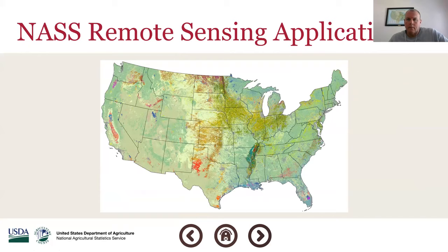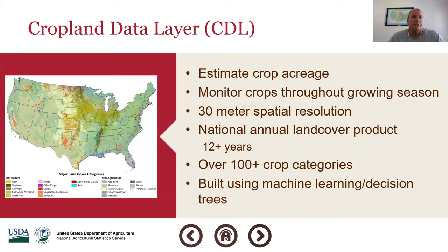Thank you, Hubert. My name is Rick Mueller — I'm the head of the spatial analysis research section, and we're using remote sensing for a wide variety of applications. Our main geospatial data product, which forms the basis for most of our other geospatial programs, is called the Cropland Data Layer. We use this to measure and estimate crop acreage independently from the survey process. We monitor crops throughout the growing season, beginning in April and running through late fall. We do our analysis at 30 meters, at national scale, and have been doing so annually for over 12 years.